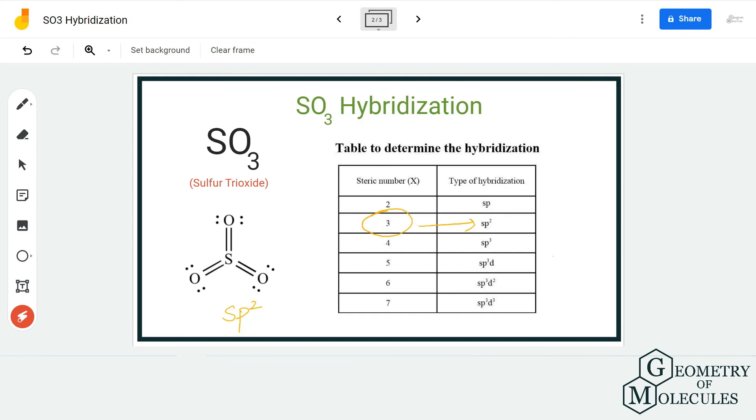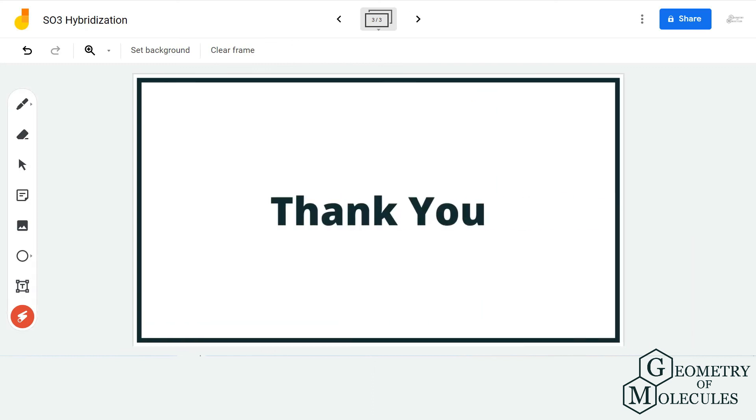As a result, the hybridization of SO3 molecule is SP2. For more such videos on Lewis structure, molecular geometry, and polarity of molecules, make sure to subscribe to our channel. Thanks for watching.